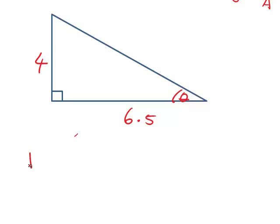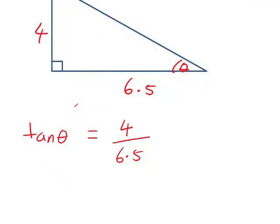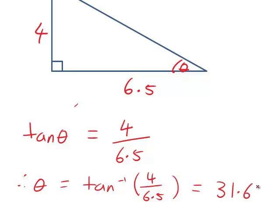So in this case in particular, tan theta is going to be equal to 4 divided by 6.5. Just make sure that you know whether your calculator is in degree or radian mode for your answer. I'm going to compute this one in degree mode, which will give me theta is the inverse tan of 4 divided by 6.5, which will work out to be 31.61 degrees correct to two decimal places.